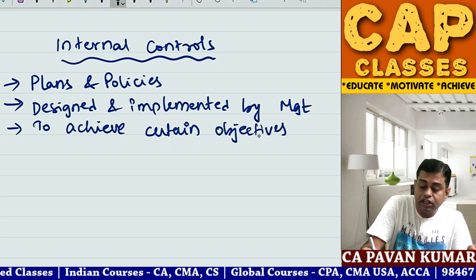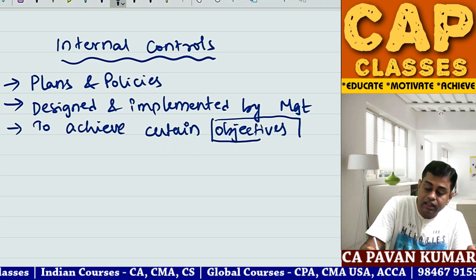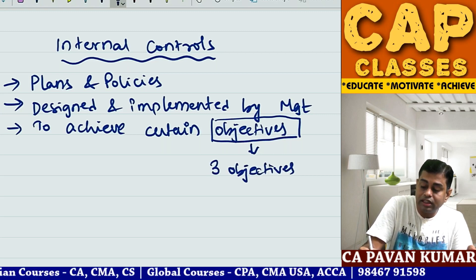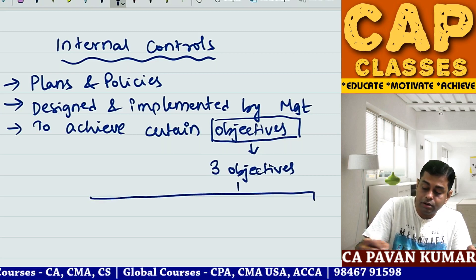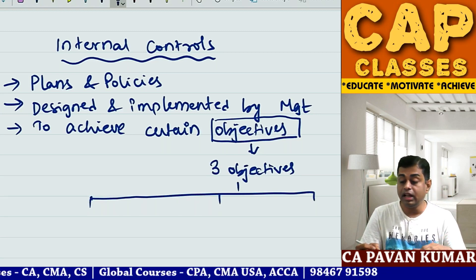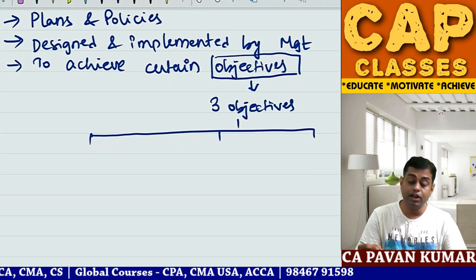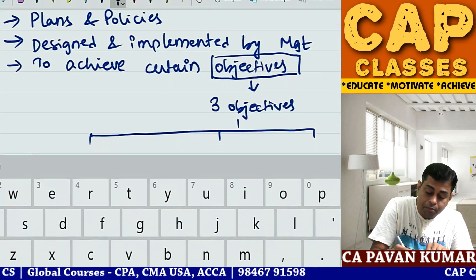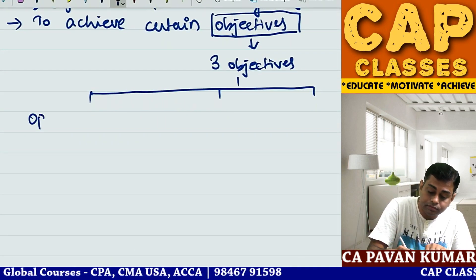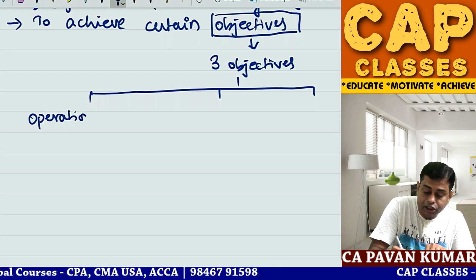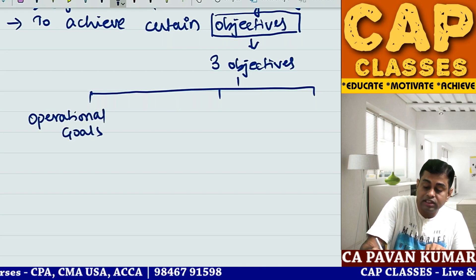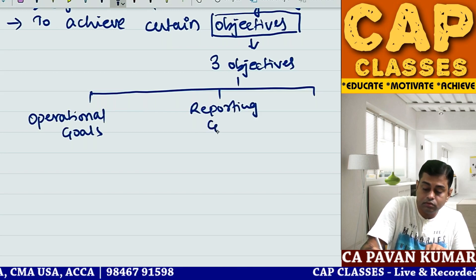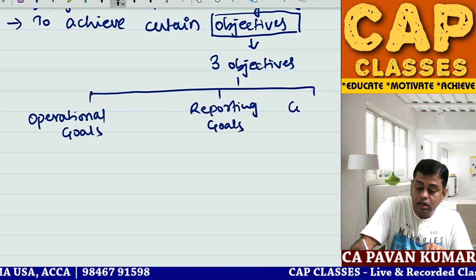What are the objectives? There are three objectives of internal controls. The first one is operating goals, the second one is reporting goals, and the third one is compliance.